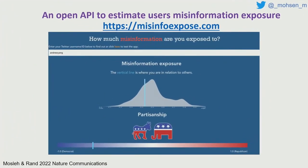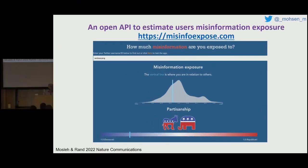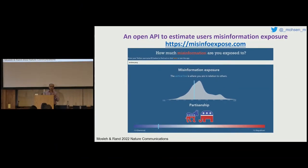We built a public tool at the misinformation exposure website, where you can enter any Twitter handle to get back their ideology and level of exposure to misinformation. We also made a public API service so you can send requests to our servers to get these scores — both ideology and misinformation exposure — for large sets of users. We tested this for more than 300 million users, which is almost more than half of the active users on the platform. Thank you very much.